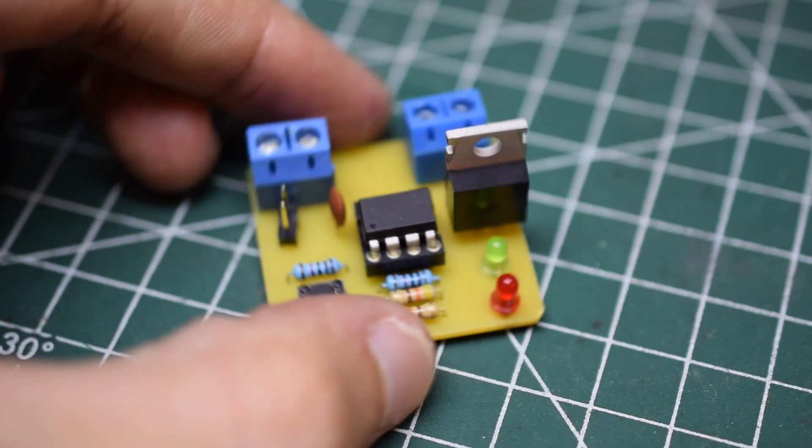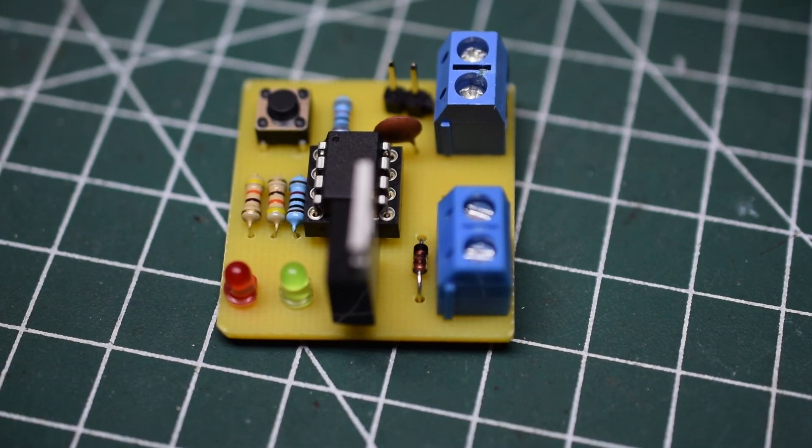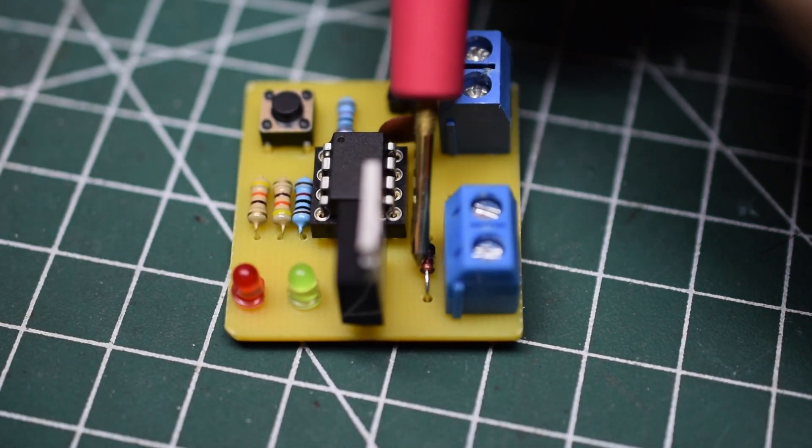Now the circuit is almost complete, it just needs one more component. This diode is to protect the MOSFET, because when you turn off an inductor, it will try to resist the change in current, which will produce a large negative voltage spike.